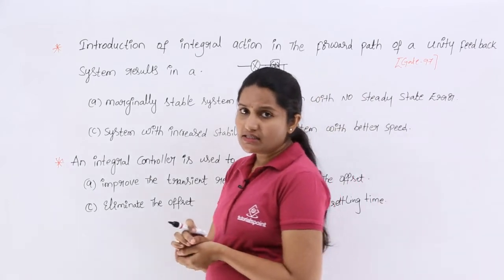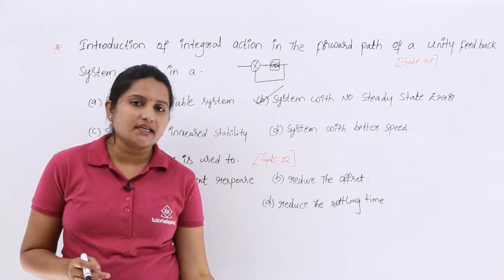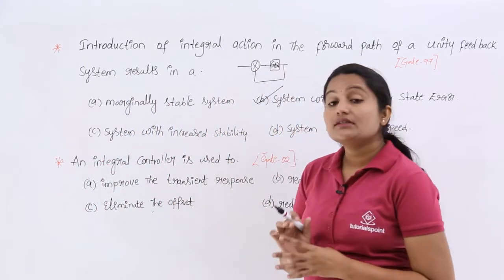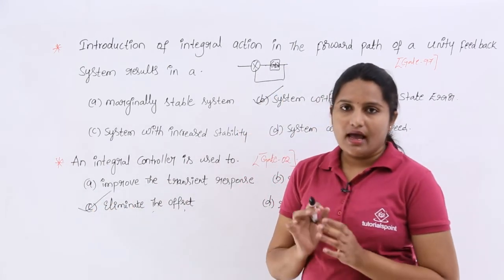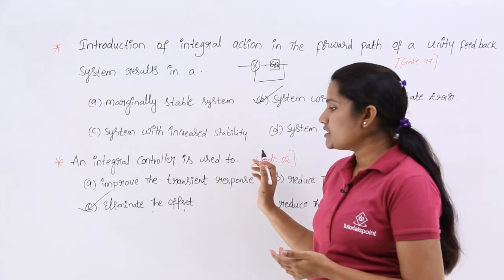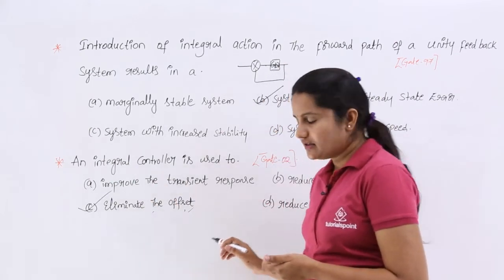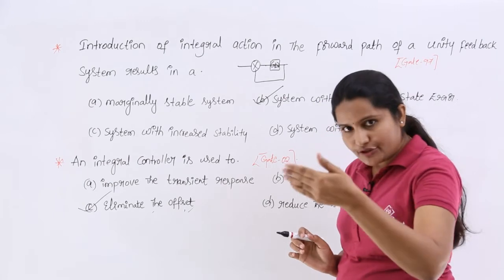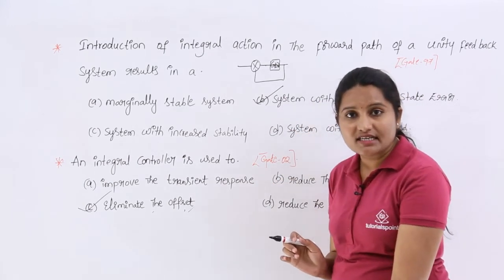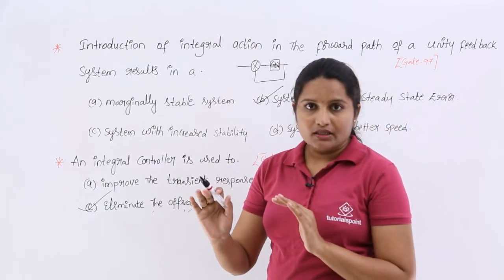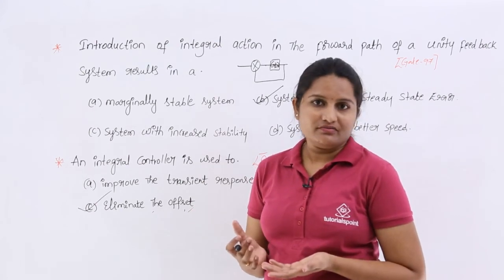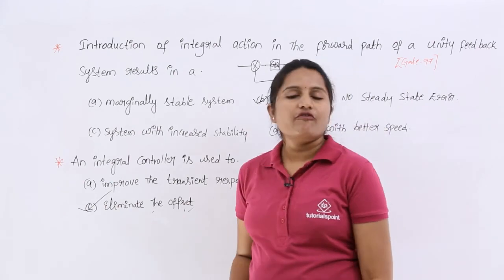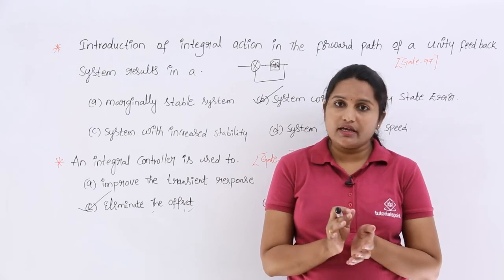Why do we use an integral controller? To eliminate the steady state error. Steady state error is nothing but offset. If you know that, then you will not miss this option: 'eliminate the offset.' That is the option which is apt for this question — an integral controller is used to eliminate the offset. If that option were not there, you could choose 'reduce the offset,' but since both are given, you pick the one with more weightage. The integral controller reduces the steady state error continuously until it finally eliminates it. So 'eliminate the offset' is the right answer. This is how you need to think about questions in gate related to controllers.